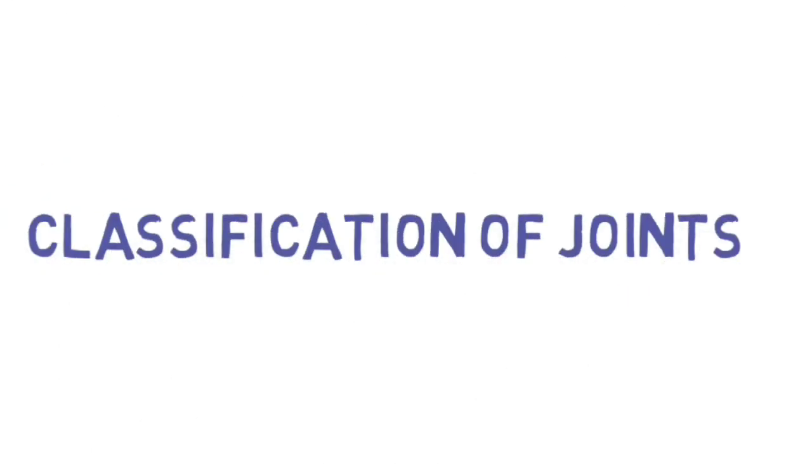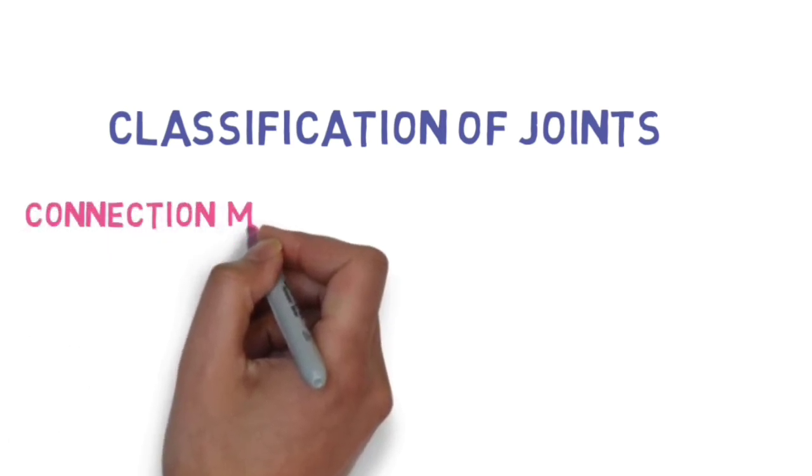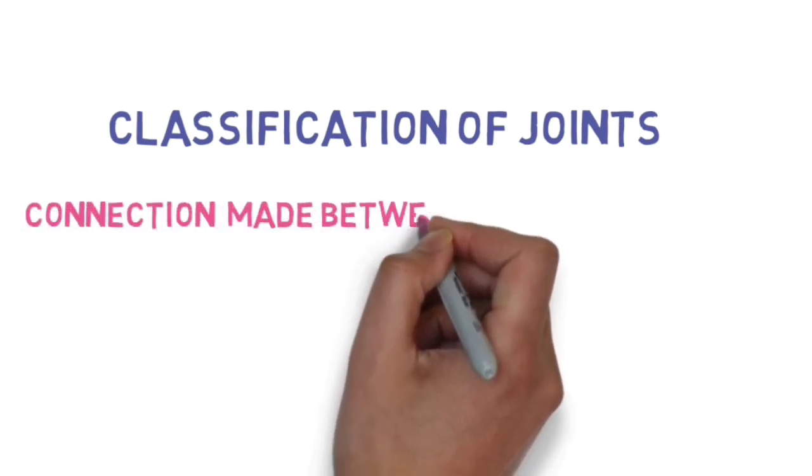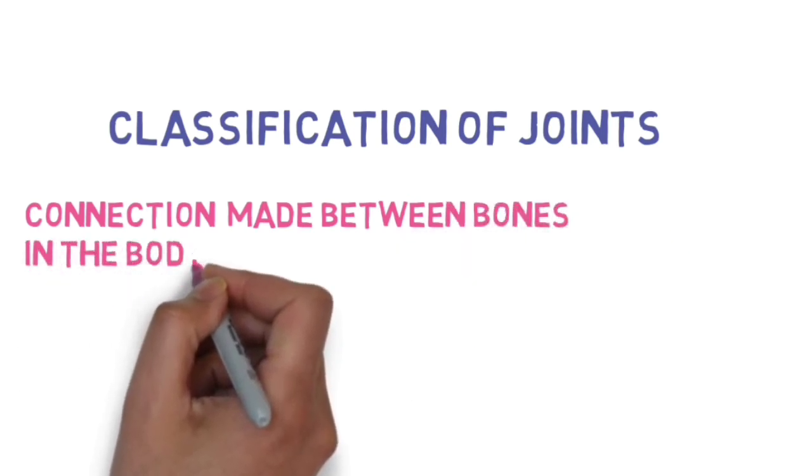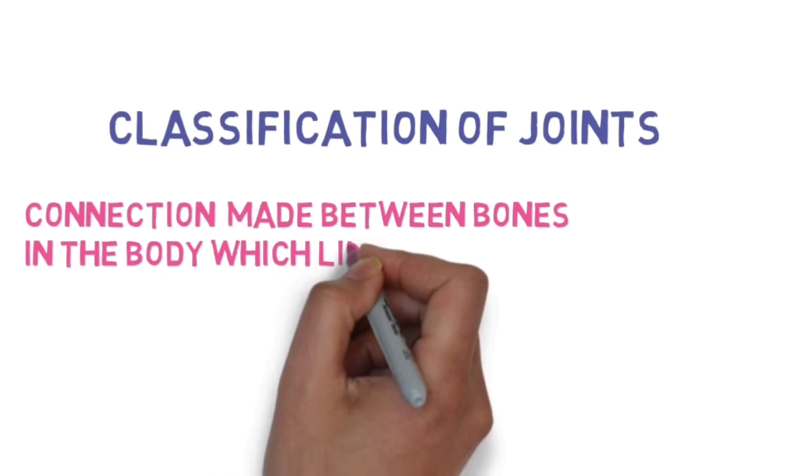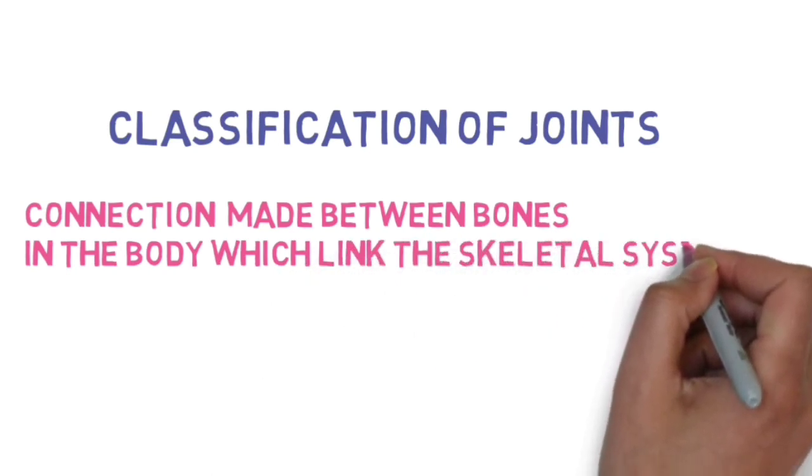What's up folks, The Info Zone is back with another video. Today's topic is classification of joints. A joint is a connection made between two bones in the body which links the entire skeletal system.